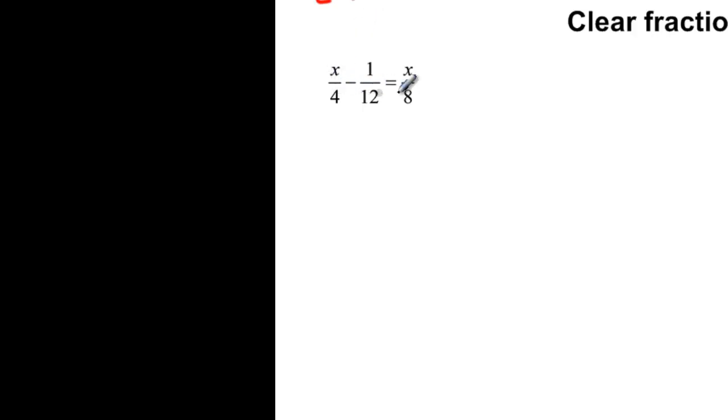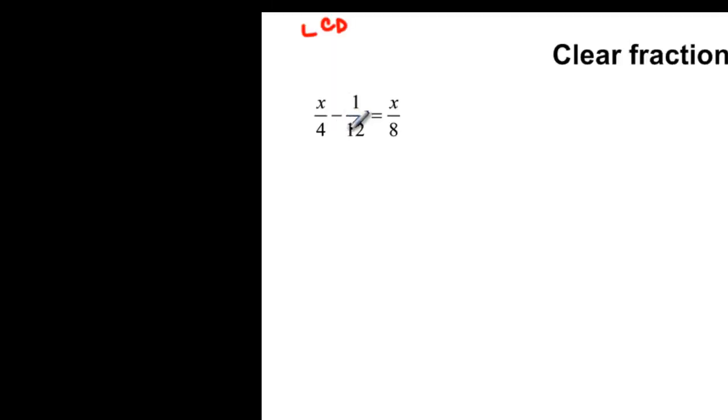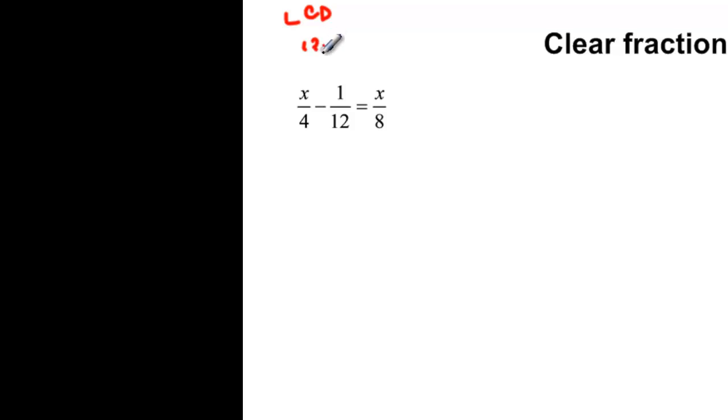So we look at 4, 12, and 8 and we're looking for something that they have in common. If we look at 12, that's 12 times 2 is 24, times 3 is 36, and times 4 is 48. We know that 4 and 12 have that in common, but we also know that 8 times 6 is 48. So 48 is going to be our least common denominator.